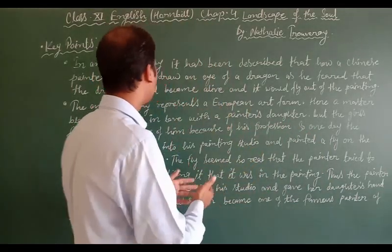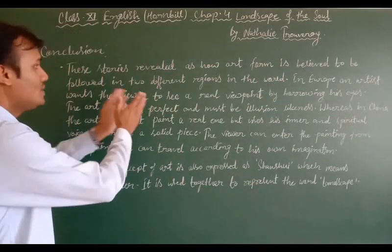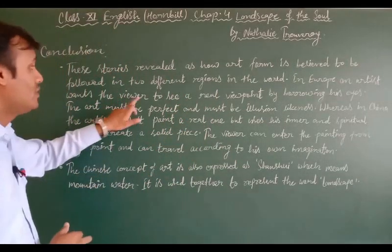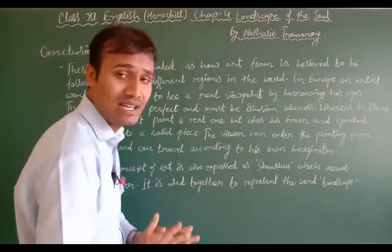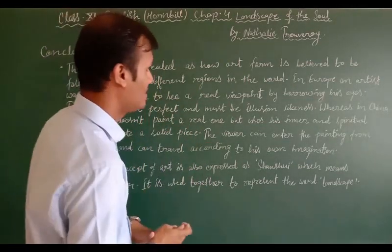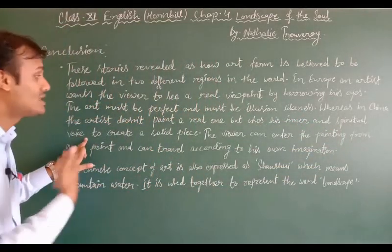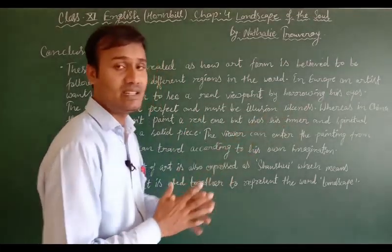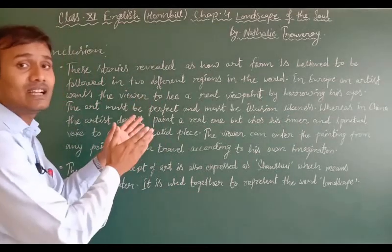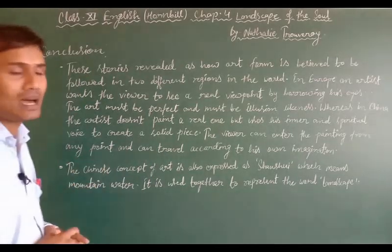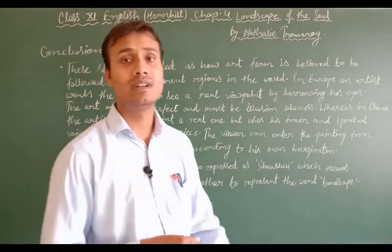Let's conclude this chapter. These stories reveal how art form is believed to be followed in two different regions of the world. In Europe, an artist wants the viewer to see a real viewpoint by borrowing his eyes — the art must be perfect and must have illusion-likeness. Whereas in China, the artist doesn't paint a real one, but uses his inner and spiritual voice to create a solid piece of painting. The viewer can enter the painting from any point and can travel according to his own imagination. That's the main difference between the Chinese art form and the European art form. The Chinese concept of art is also expressed as shanshui, which means mountain water, used together to represent the word landscape.